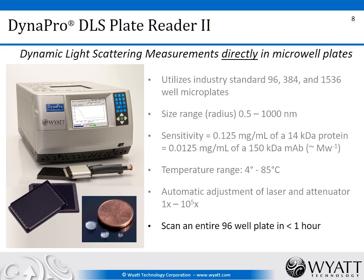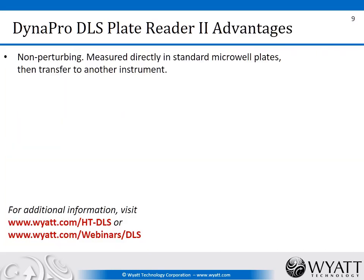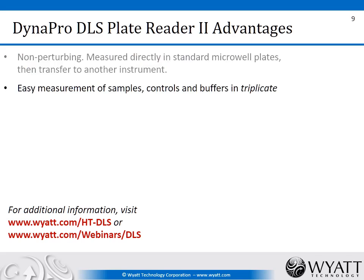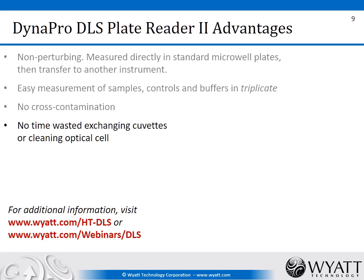You can scan an entire 96-well plate in less than an hour. The advantages of making measurements with the DLS plate reader include: it's a non-perturbing technique; measurements are made in standard microwell plates; you can recover the sample or transfer the plate to another instrument such as a fluorescence detector. Because you can load up the plate with many samples, it's easy to make robust measurements including controls, buffers, and replicates — triplicates, quadruplicates as you like. There is no cross-contamination, no pipetting out and back in, no fluid transfer, and everything is done in place.